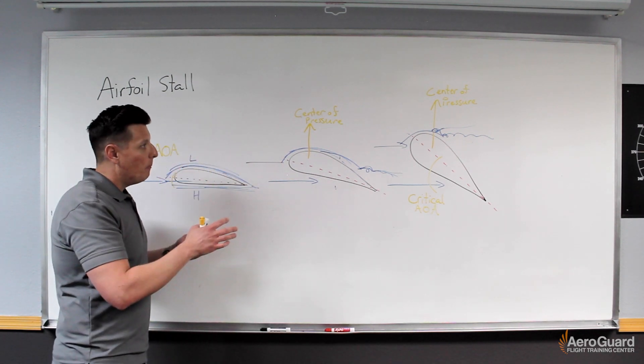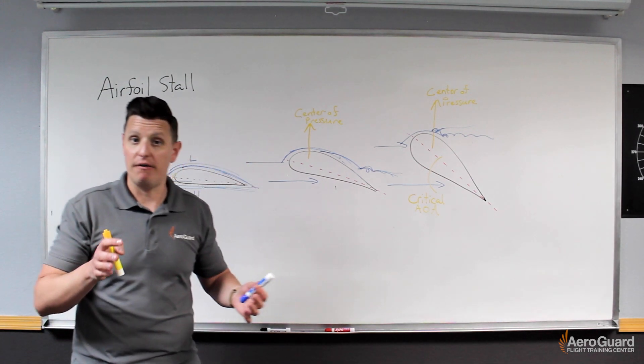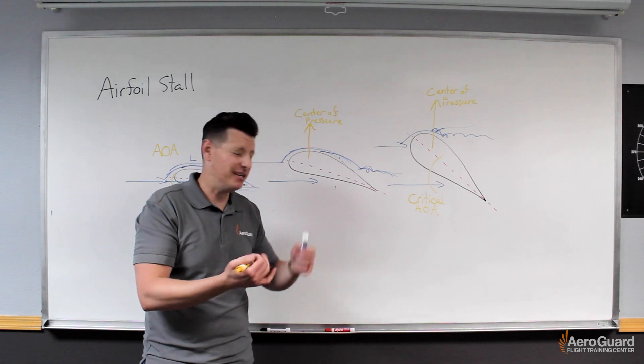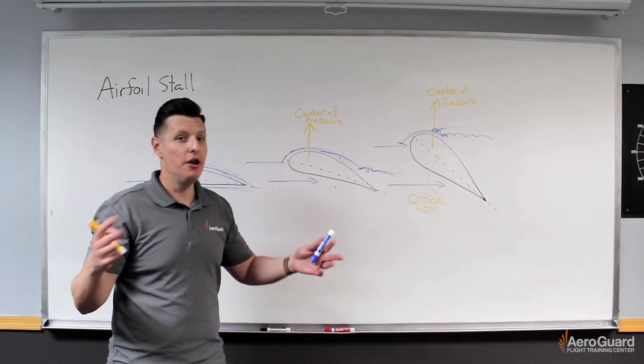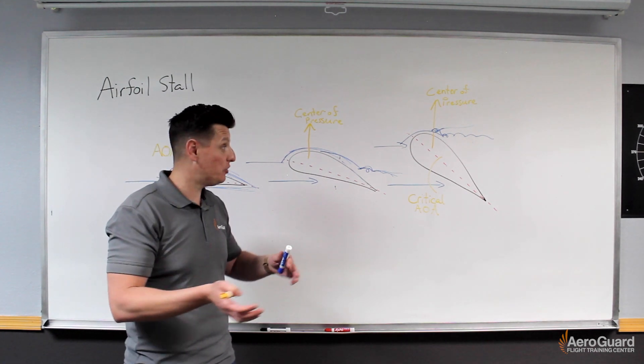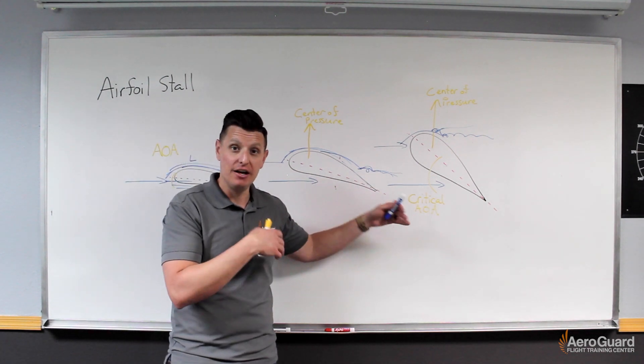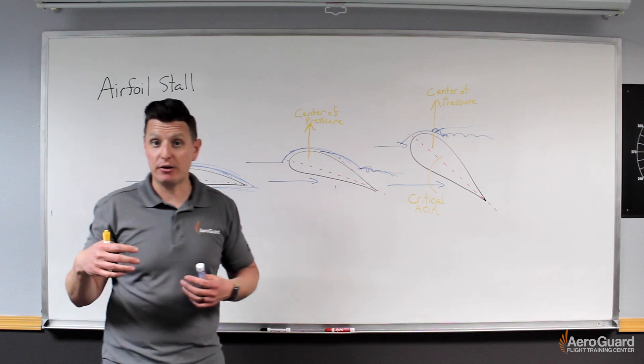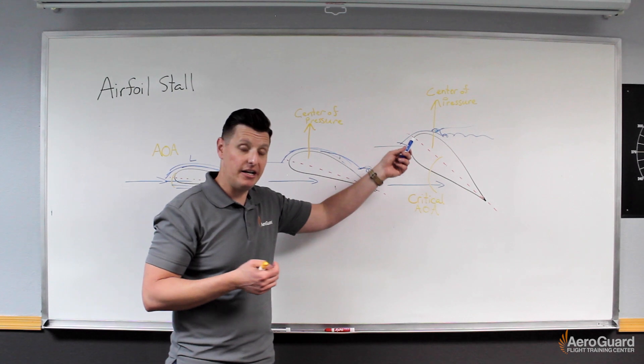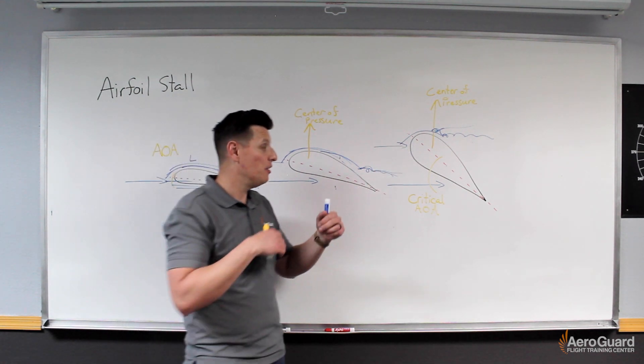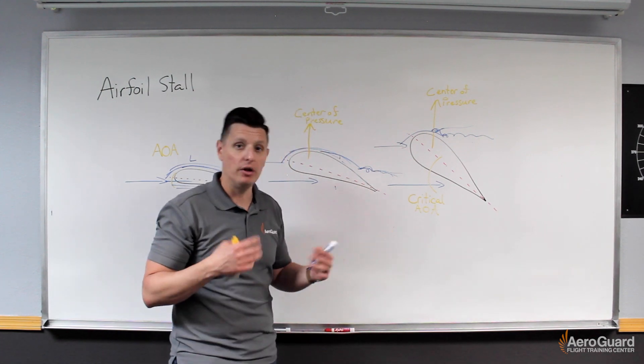So where a stall occurs is contingent upon the angle of attack reaching this critical angle of attack. This would then apply to various configurations of the aircraft, meaning I can stall the airplane at different airspeeds, at different attitudes, at different power settings, different weights. None of that really applies as much to the stall as does our angle of attack. This is the only contributor. Those other factors may affect where the relative wind is coming from, or where our chord line is, but the reality is the only thing driving this stalled condition is when we reach our critical angle of attack.